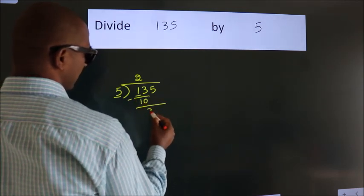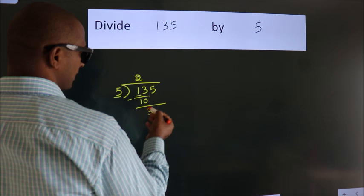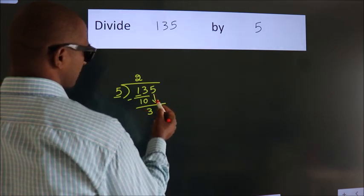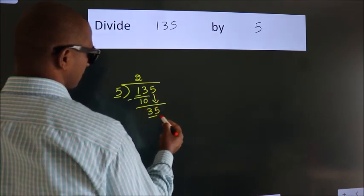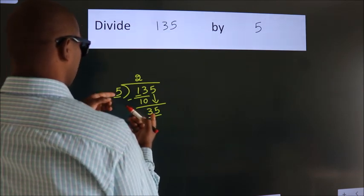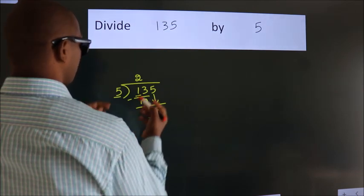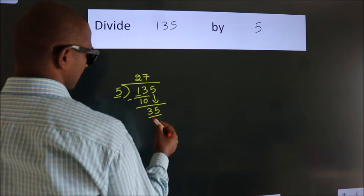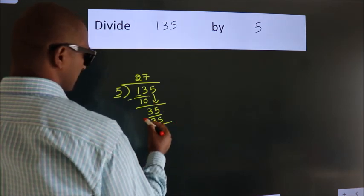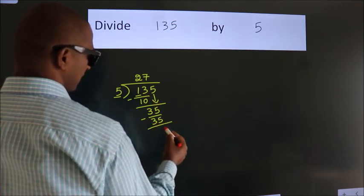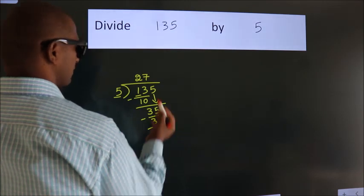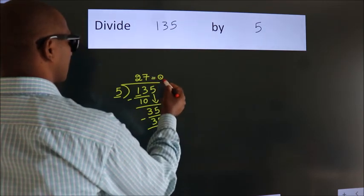Now we subtract and get 3. After this, bring down the beside number 5, giving us 35. In the five times table, five sevens are 35. We subtract and get zero. Remainder is zero, so 27 is our quotient.